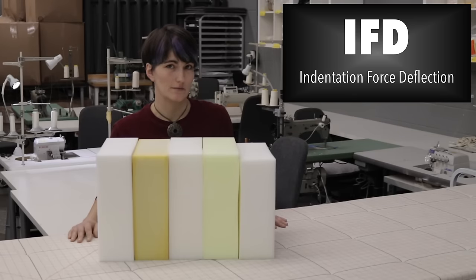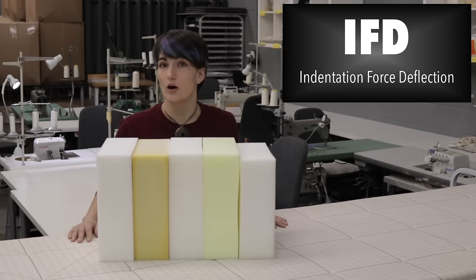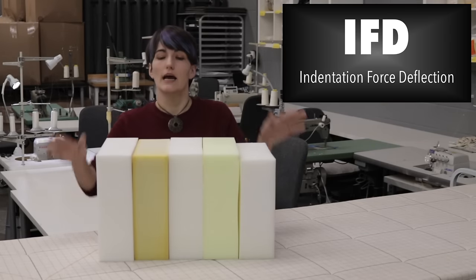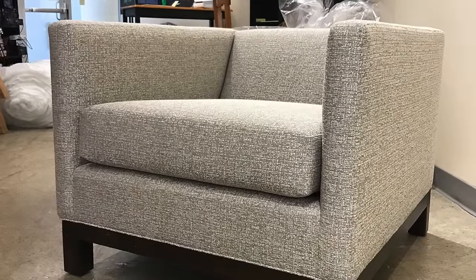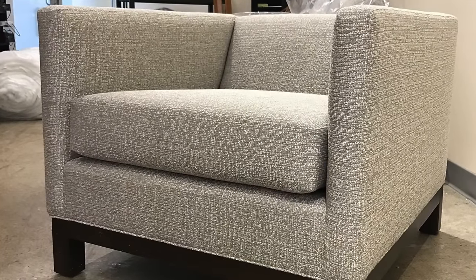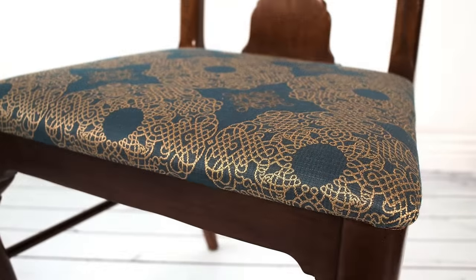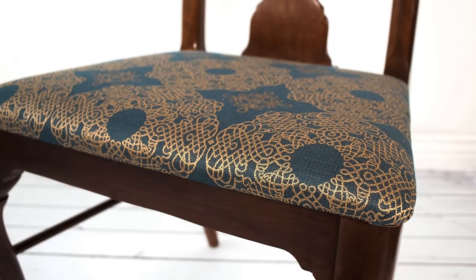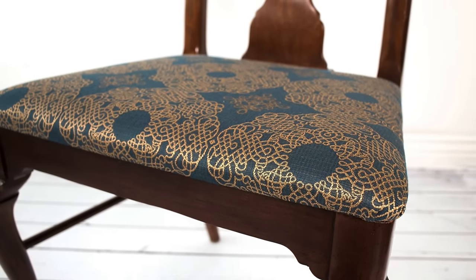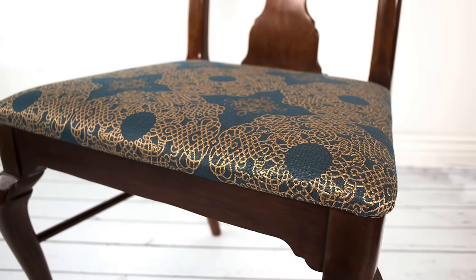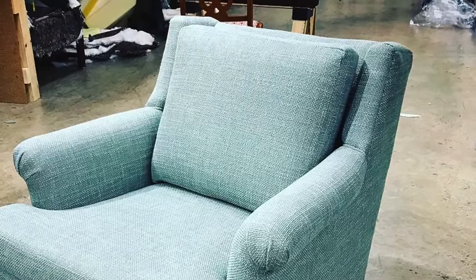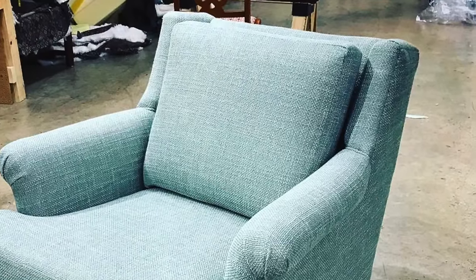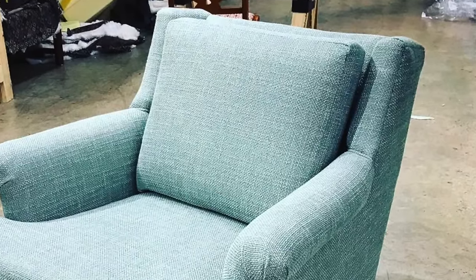Let's start with IFD. That is an indicator of how firm your foam is. For example, a standard sofa cushion four to six inches is going to be in the mid-30s. If you're doing low profile seating, like a dining room chair one to two inches, you're going to want a higher IFD, something like 45 to 70. For a back cushion, which you want to be softer, your IFD may be under 20.